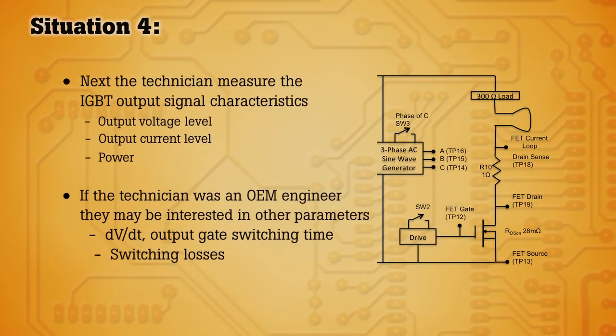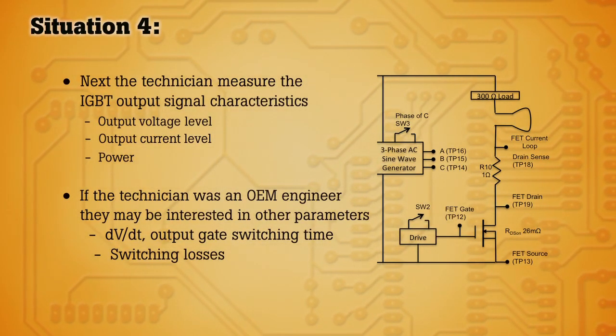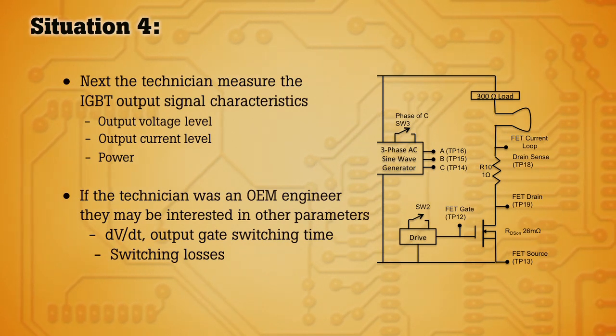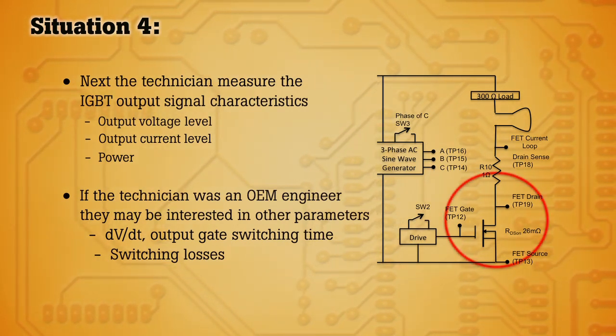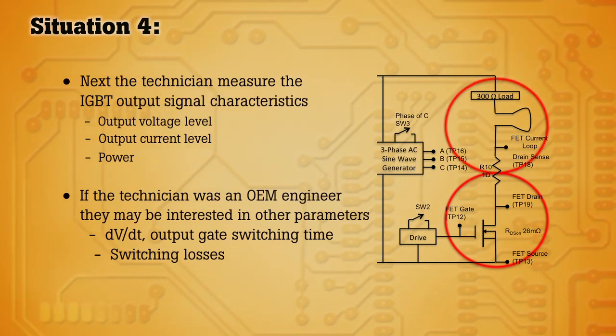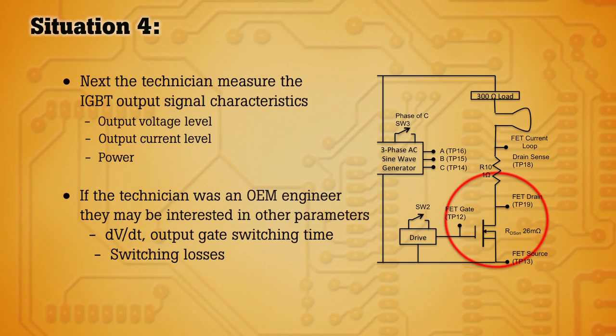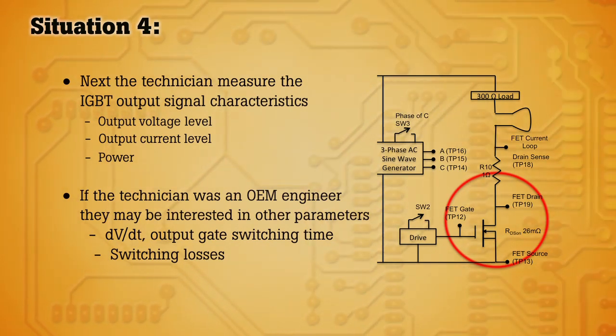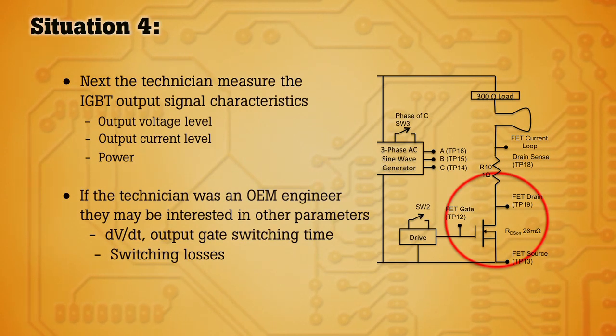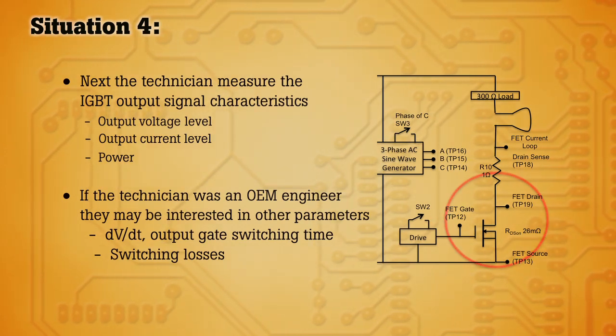For this test, we need to measure specific characteristics on the output of the electronic switches. Measurements we're interested in include the output voltage level, the current through the circuit, the actual current, and calculating the power through the circuit to see if there are any other load conditions. We might also want to look at the fast rising edge of the switch, a measurement called DVDT or Delta Voltage of Delta Time.